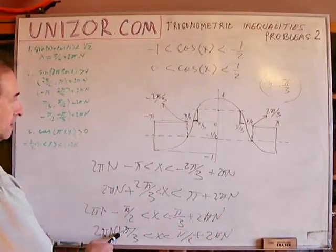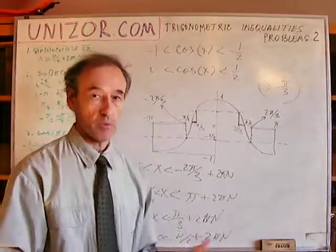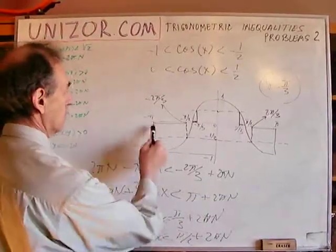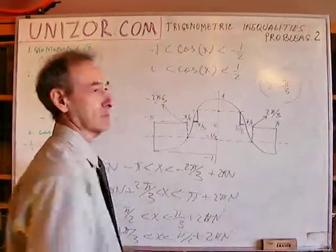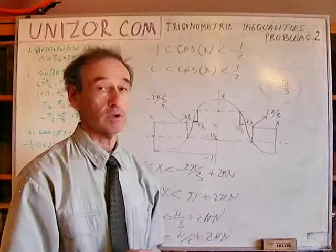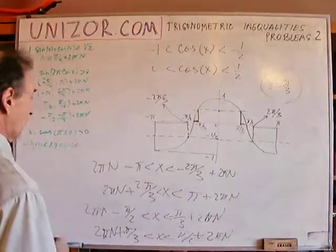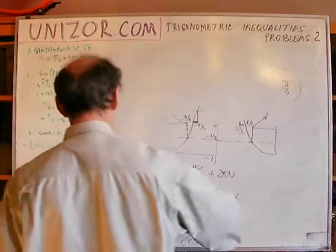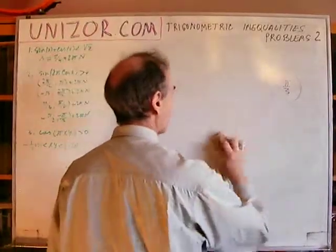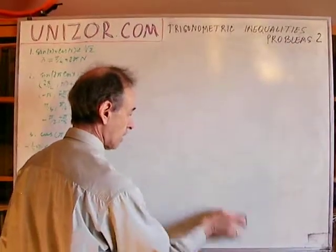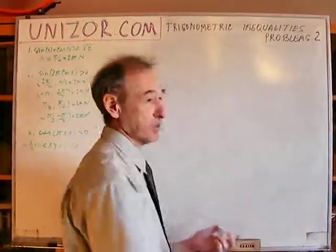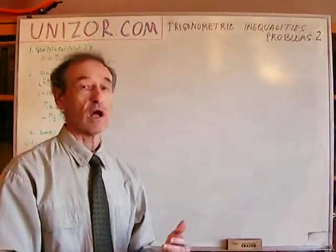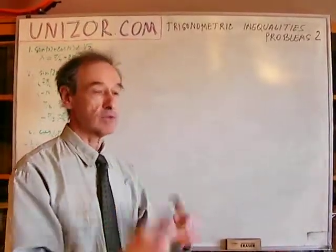So these are four different groups of intervals. For any specific n, we have four intervals where the original inequality holds true. Let me summarize: we reduced the original quite complicated inequality into a combination of simple ones. From sine of something — sine of 2π·cosine(x) — we can reduce to a condition on 2π·cosine(x), and from that, we can reduce it to a condition on x. It's like a two-step procedure.